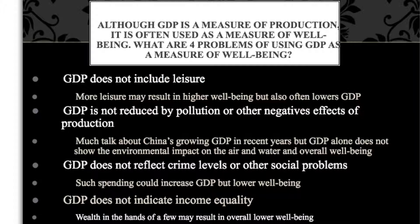So let's look at the first one — GDP does not include leisure. If I'm looking at two countries and they have similar GDPs, one a little higher than the other, I might think I want to live there because they have a higher GDP. But the point of this particular issue is that maybe the country with a lower GDP has workers who work less and have more leisure time — maybe it's a more enjoyable lifestyle. More leisure could result in higher well-being, but because it's leisure, it's not producing something for the marketplace and therefore GDP could be lower.